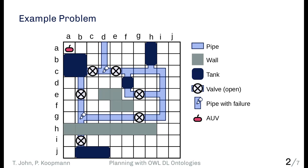Similarly, the robot cannot be inside a tank. Another example: if two pipe segments are in neighboring cells, we expect fluid can flow from one to the other, but if there is a valve in the middle blocking the flow, then the flow should not continue further. This semantic information needs to be captured somewhere.